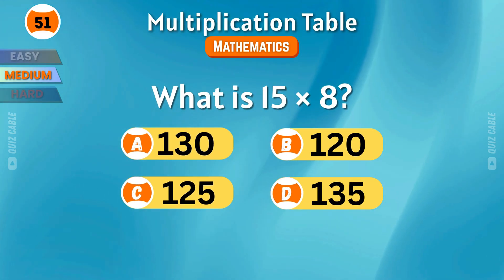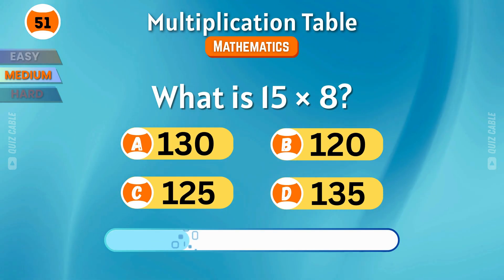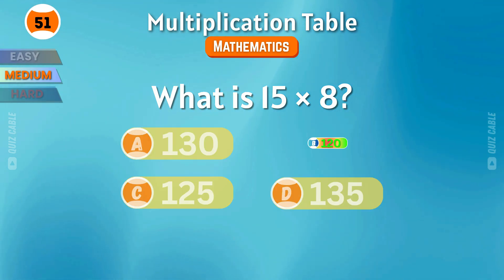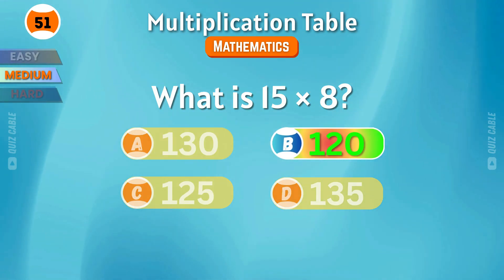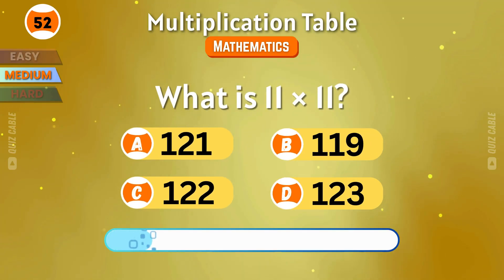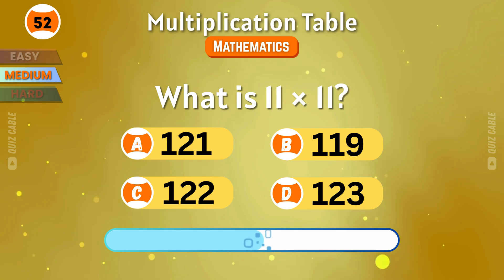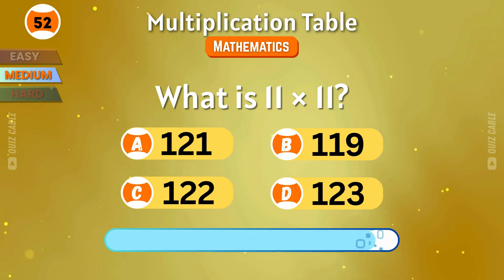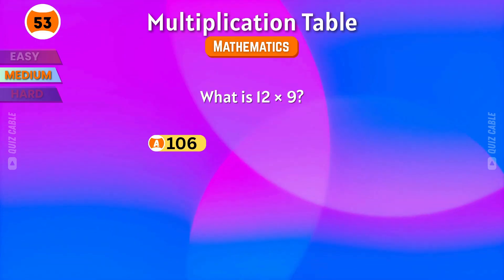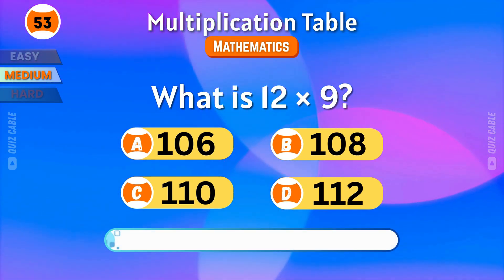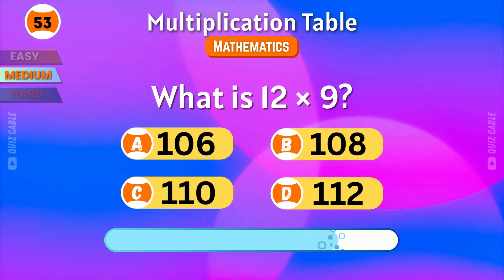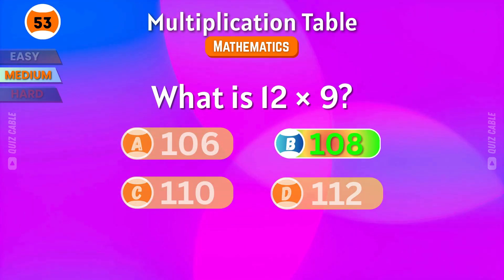What is 15 times 8? That makes 120. What is 11 times 11? A perfect 121. What is 12 times 9? That's 108.